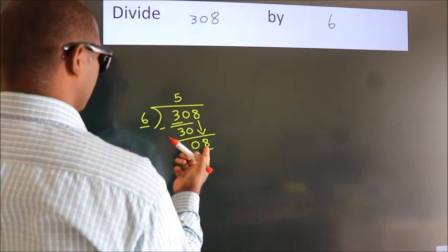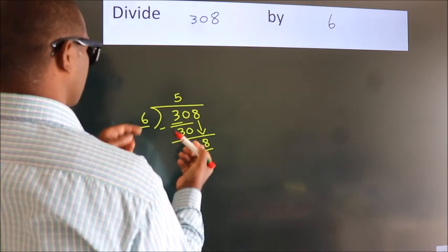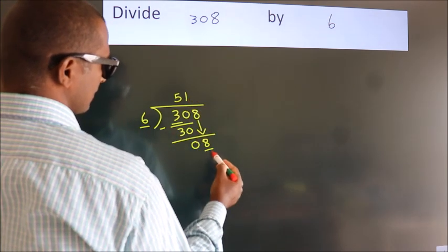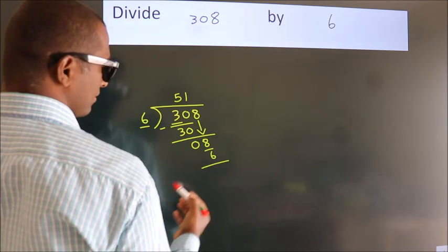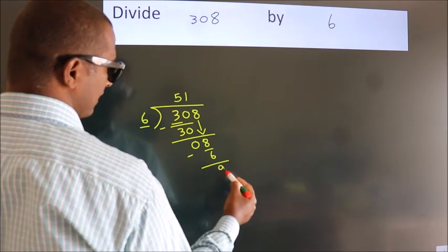A number close to 8 in 6 table is 6 once, 6. Now we subtract, we get 2.